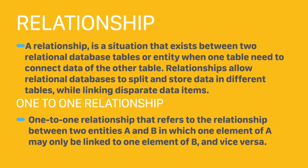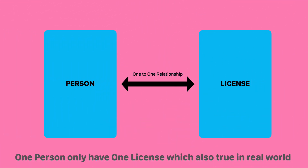One of the types of relationship which we cover in this video is one-to-one relationship. A one-to-one relationship refers to the relationship between two entities A and B in which one element of A may only be linked to one element of B and vice versa. For example, suppose we have two entities: person and license — we can connect each other with a one-to-one relationship, because one person can only have a unique, single license. There are various examples where we have to establish a one-to-one relationship when connecting one entity with another and having unique data for each.